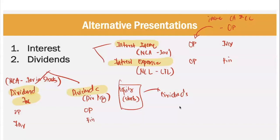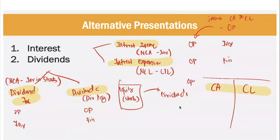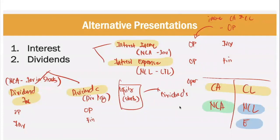To summarize the alternative presentations: Interest Income — Operating or Investing. Interest Expense — Operating or Financing. Dividend Income — Operating or Investing. Dividends — Operating or Financing. These are the different alternative presentations for Interest and Dividends. Remember our T-Account: if it comes from Current Asset and Current Liability, we have Operating; if it comes from Non-Current Asset, we have Investing; if it comes from Non-Current Liability and Equity, we have Financing.